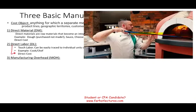Direct labor is also considered direct cost. So notice: direct material is direct cost, and direct labor is direct cost — I'll be abbreviating those as DM and DL. Now think about a pizzeria — are DM and DL the only costs we're going to incur to make a pizza? Of course not. We need the building, utilities, and the oven. We need utilities to run the oven, maybe wood if using fire.